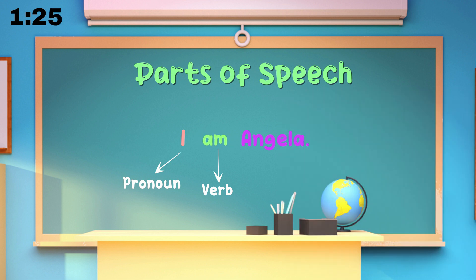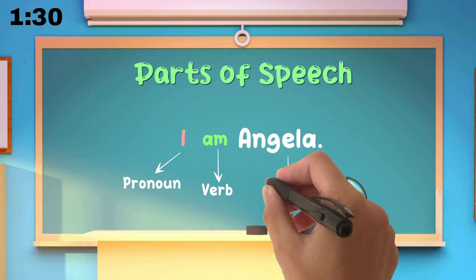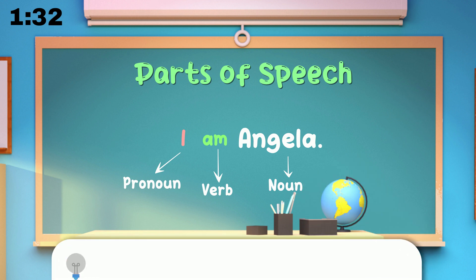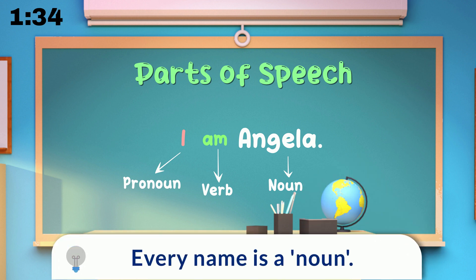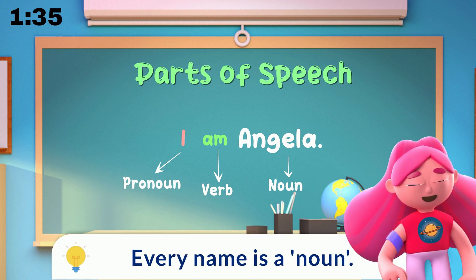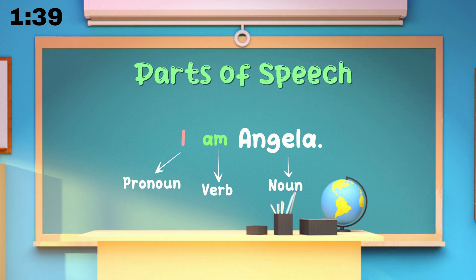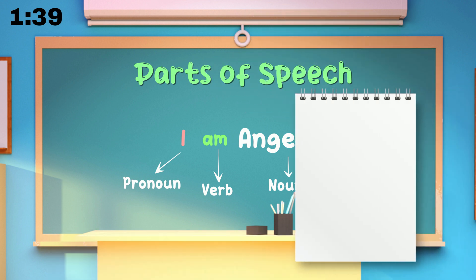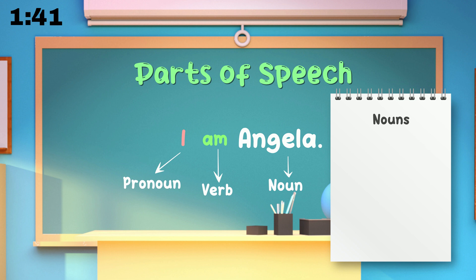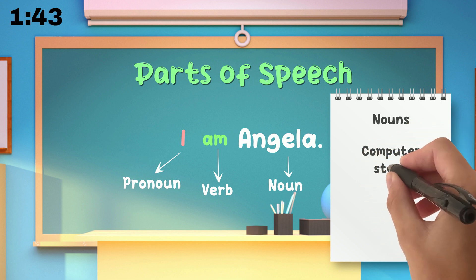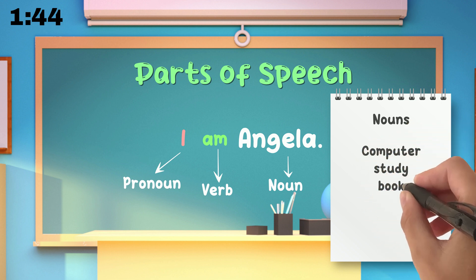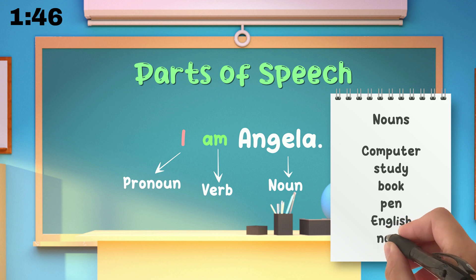Now comes the last one: 'Angela.' Yes, it's my name. So you already solved it, right? Every name is a noun in terms of parts of speech. Can you mention some other nouns? Whatever you see around and think of has a name. For example: computer, study, book, pen, English — even the word 'noun' itself is a noun.